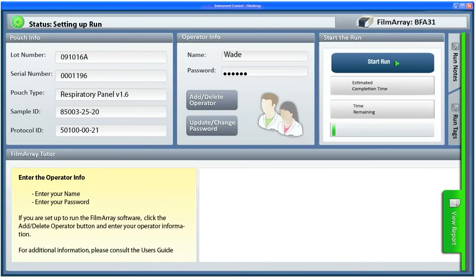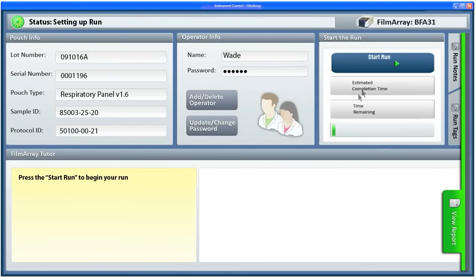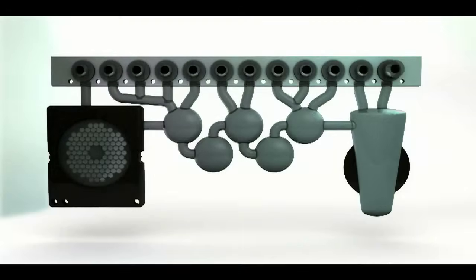You are free to walk away since all remaining steps are completely automated. The FilmArray displays the remaining time. Now let's take a look at what happens inside the pouch.